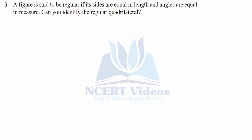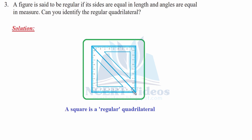Question three: A figure is said to be regular if its sides are equal in length and angles are equal in measure. Can you identify the regular quadrilateral? Among the shapes studied, only the square holds true, because all four sides are equal and all angles are 90 degrees. Therefore the square is the regular quadrilateral.